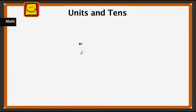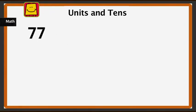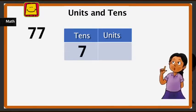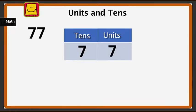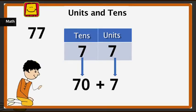Now what number is this? It is a little big. Let us break it up into units and tens. There is 7 in the units place and 7 in the tens place. How much is 7 tens? 7 tens is 70, and this is 7 units, which we add to 70. We get 77.